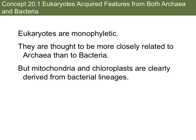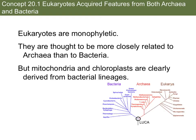Eukaryotes are monophyletic, meaning that they would have their own branch on the tree of life, such as shown here. You can see on this tree where the last universal common ancestor would be found. And then for eukaryotes, the branch we are talking about is over in this area right here. Eukaryotes are cells that include animal, fungi, plants, protista, and other organisms.